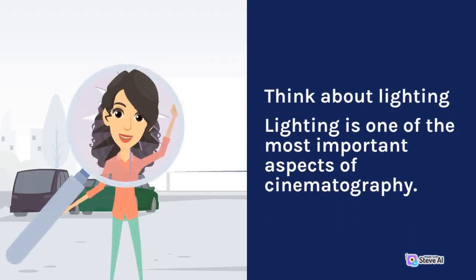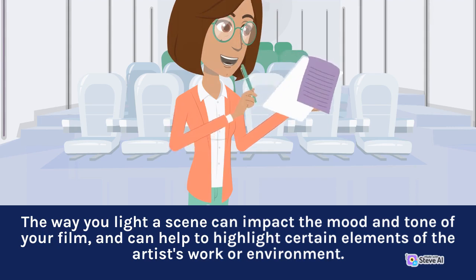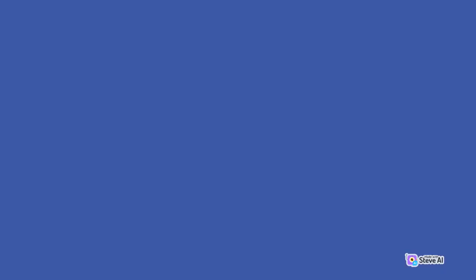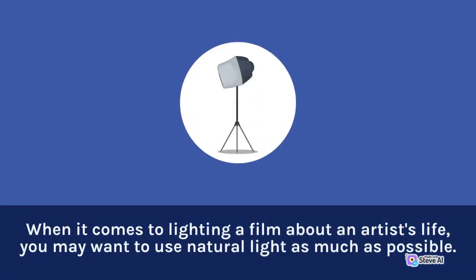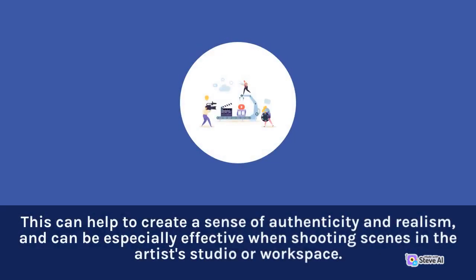Think about lighting. Lighting is one of the most important aspects of cinematography. The way you light a scene can impact the mood and tone of your film, and can help to highlight certain elements of the artist's work or environment. When lighting a film about an artist's life, you may want to use natural light as much as possible. This can help to create a sense of authenticity and realism, and can be especially effective when shooting scenes in the artist's studio or workspace.